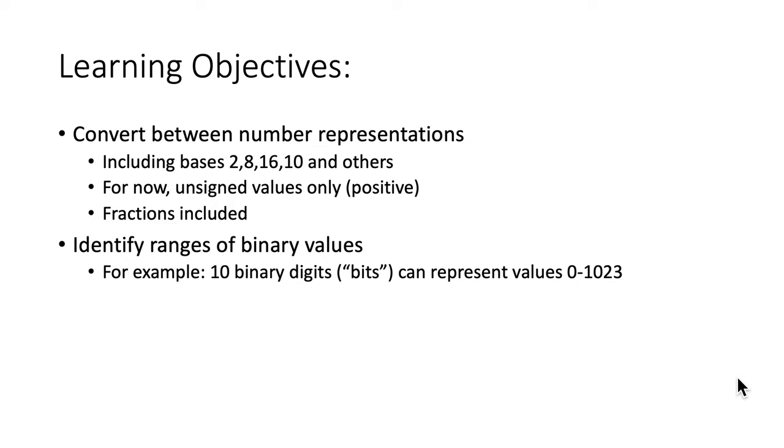Learning objectives include converting numbers between different representations such as base 2 and 10, binary and decimal. We'll also talk about bases 8 and 16 and bases in general. For now we'll just stick with unsigned values, that is positive numbers. We will talk about fractions, and through the course of this you'll hopefully get some comfort level with knowing the ranges of binary values. For example, with 10 bits or binary digits we can represent values 0 to 1023.